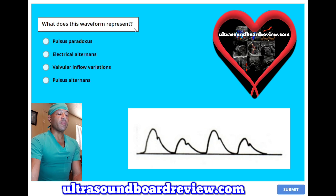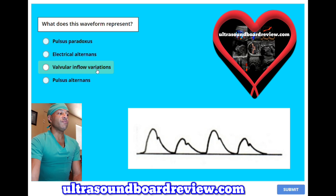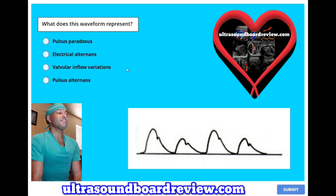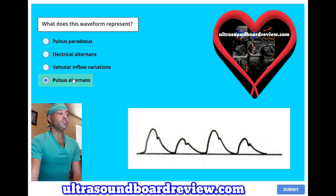What does this waveform represent? A, pulsus paradoxus; B, electrical alternans; C, valvular inflow variations; or D, pulsus alternans? The answer is D, pulsus alternans.